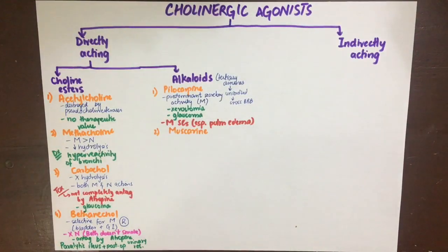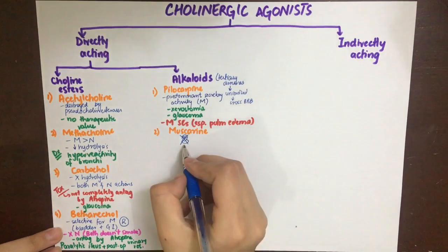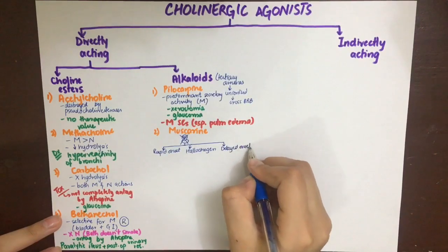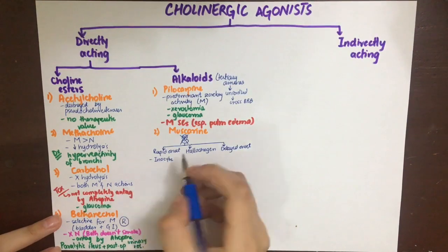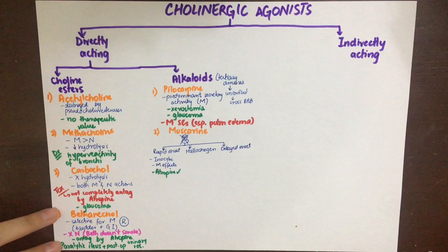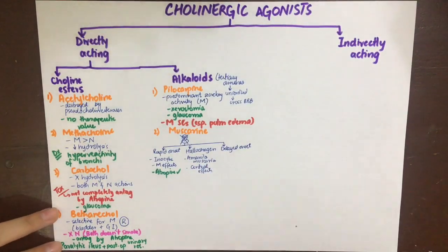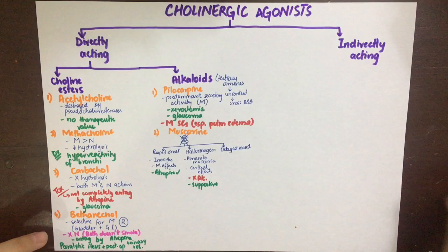The next alkaloid, muscarine, is mainly important for its role in mushroom poisoning by the Inocybe species. Amanita muscaria, causing the hallucinogen type, contains only traces of muscarine. There are three types of mushroom poisoning: rapid onset, hallucinogen type, and delayed onset. The rapid onset type is caused by Inocybe species and mainly caused by muscarine, so it can be completely antagonized by atropine — atropine is the antidote. The hallucinogen type has mainly central effects and is caused by Amanita muscaria, which has muscarine only as a trace element but also contains other toxins such as muscimole. Therefore atropine is contraindicated in this case, and therapy is mainly supportive.